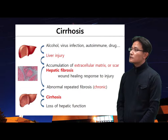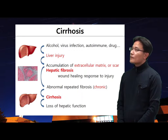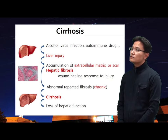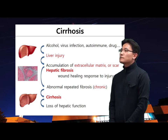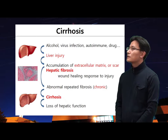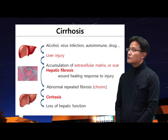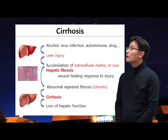Cirrhosis is mostly caused by alcoholism, hepatitis virus, autoimmune conditions, drugs, and fatty liver. In response to liver injury, extracellular matrix or scar tissue accumulates — a process called fibrosis. Accumulation of extracellular matrix is considered a wound healing process. However, if the liver is damaged by long-term injury, scar tissue from fibrosis replaces healthy tissue, and over time this process results in cirrhosis.